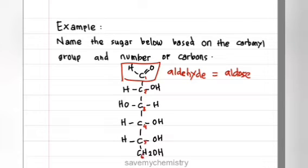Count the number of carbon atoms: one, two, three, four, five, six. And it has six total carbons, so the sugar is a hexose. Hex means six. The sugar is called an aldohexose.